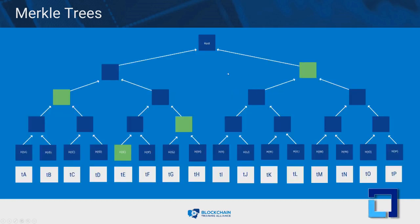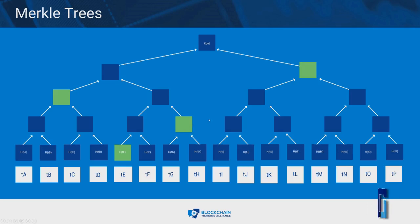But when using a Merkle tree, Alice only needs to send the nodes that contain the transaction she is looking to validate. Let's say Alice wants to validate transaction F. Alice would only need to send the data of transaction F and 4 hash values to Bob. Bob would then calculate the hash value based on the given information, and if the root matches the block, the transaction can be assumed to be valid.